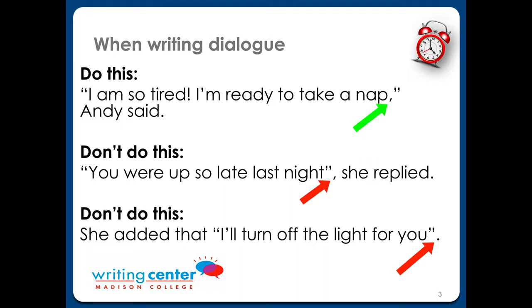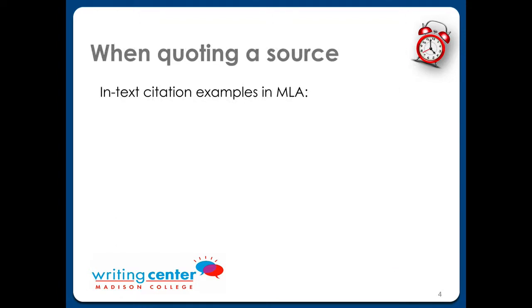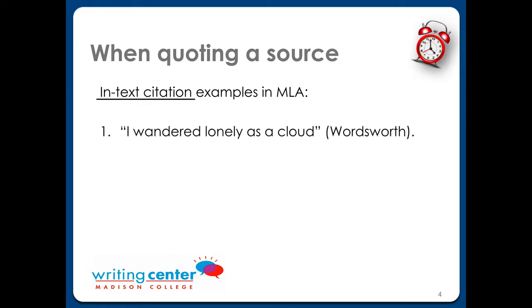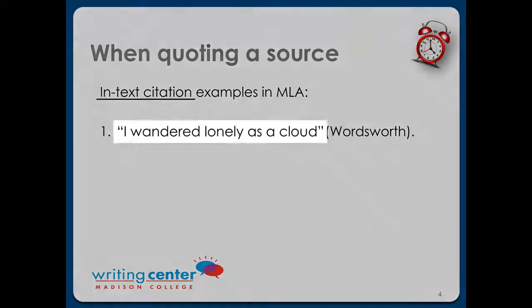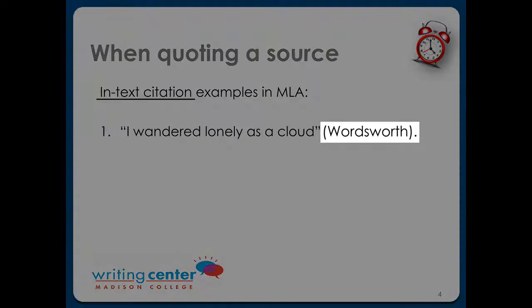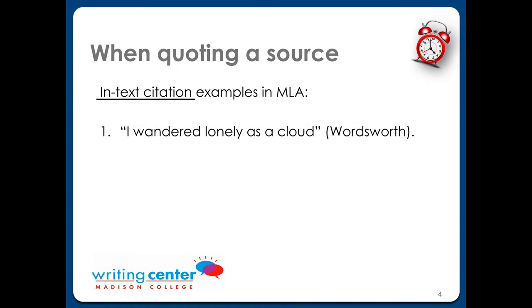Now let's talk about using quotation marks when writing an academic paper. If you quote a source, you need to tell the reader where the quote came from. That information is called an in-text citation. In the first example, you see the writer starts with a quote, then includes the source information in parentheses, then adds a period right here. The period goes after the source, not after the quote. Just remember, the source is not part of the quote, but it is part of the sentence, and that's why the period goes at the end.